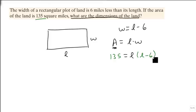So when we do this, we then multiply this out to be l squared minus 6l, subtract 135 from both sides.